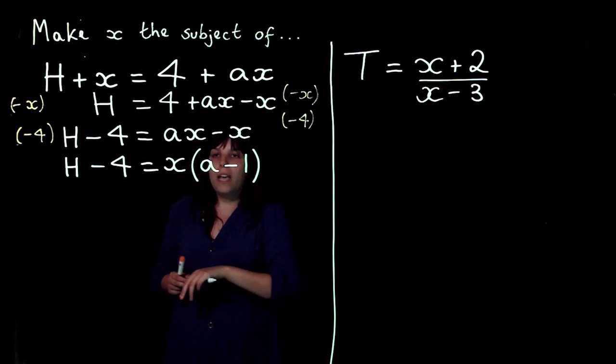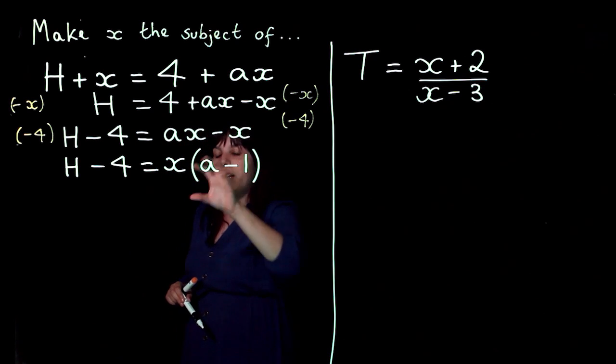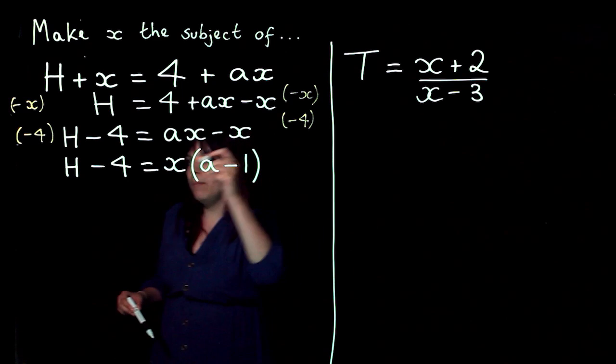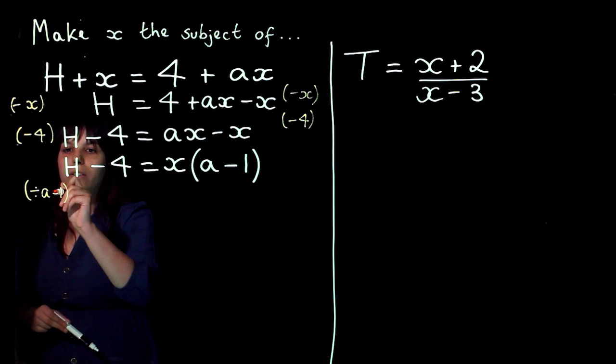So what I'm going to do is because I'm multiplying my x by a minus 1, I'm going to divide by a minus 1 to get rid of that a minus 1 and get my x on its own. So if I do that to both sides.